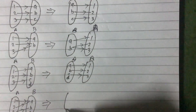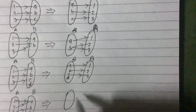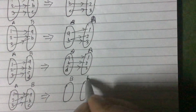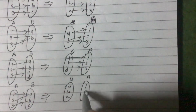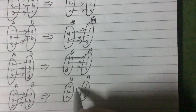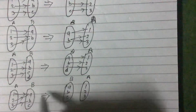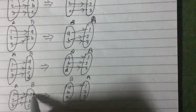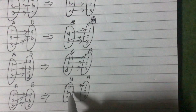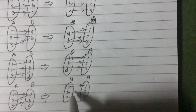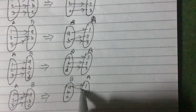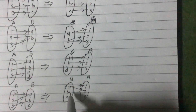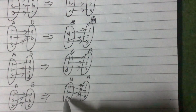Similarly, for the fourth one, interchanging gives set B to set A: A maps to 1, then since both 1 and 2 originally mapped to A, A maps to 2 as well. B maps to 3. C is extra here with no image.